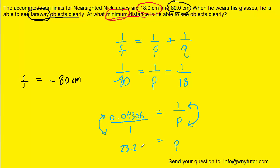So this would be the correct answer. This is the nearest object distance that Nick can see objects while wearing his glasses.